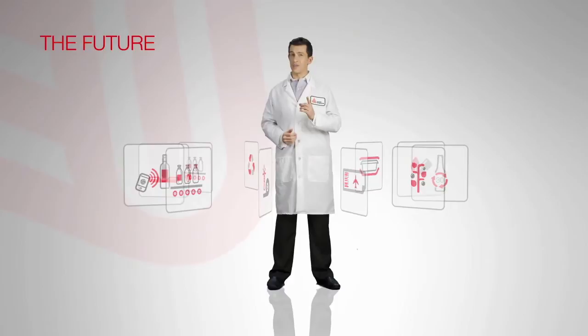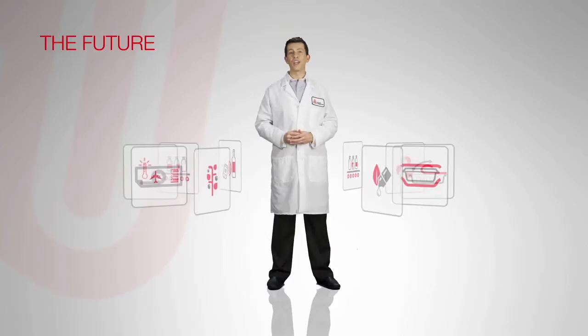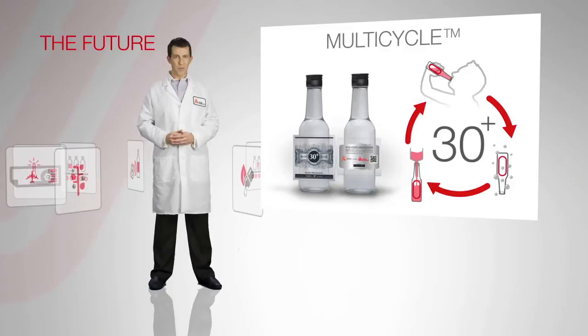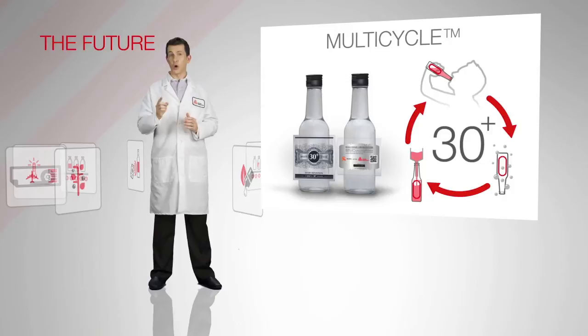We have several more ideas that could enter the market sooner. For example, we are working on multi-cycle, a new material for labeling beer and beverage containers that is tough enough to withstand more than 30 cycles of use, disposal, and recycling.